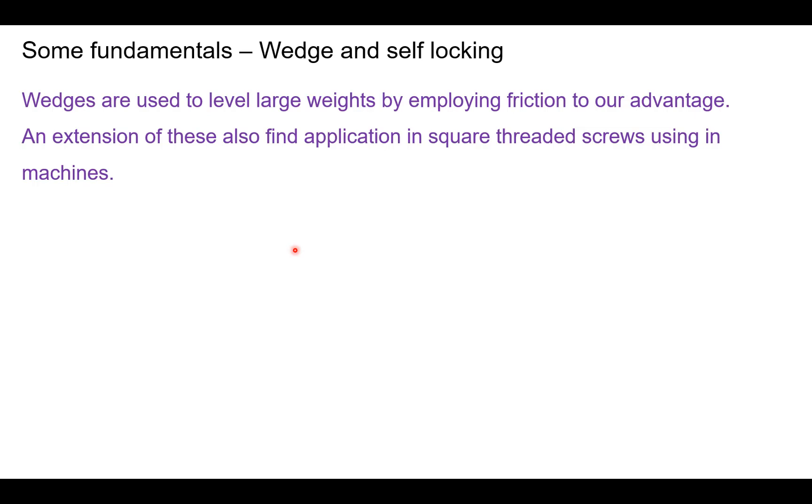Let us look at some fundamentals pertaining to wedge and the concept of self-locking. Wedges are basically used to level large weights and to lift large weights by employing friction to our advantage. An extension of these are also found in square threaded screws used in machines for lifting weights.